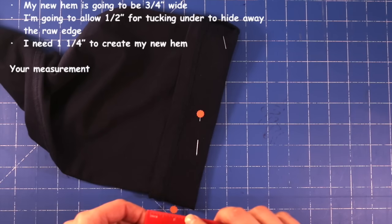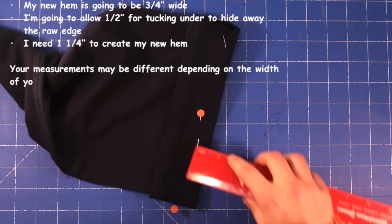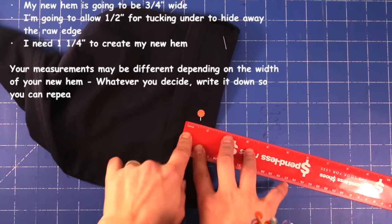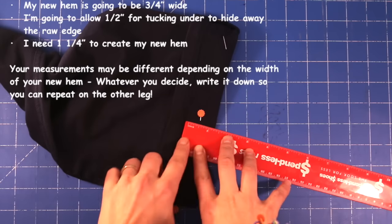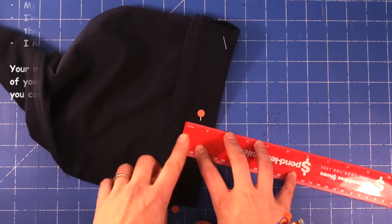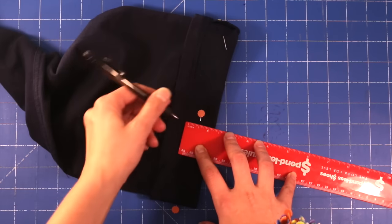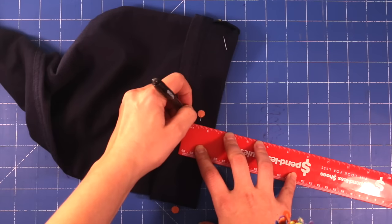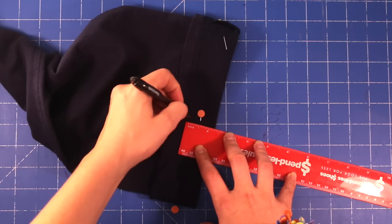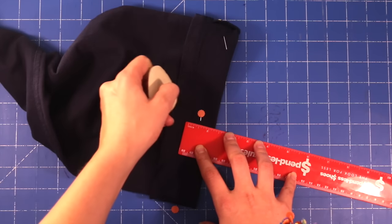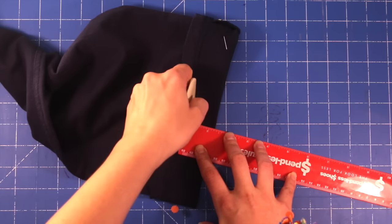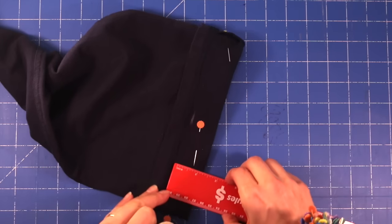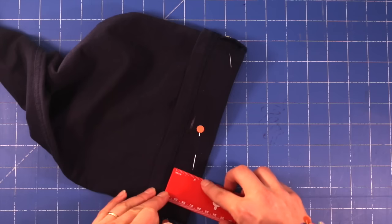So all together I need to allow one and a quarter inches to secure my new hem. So what I'm going to do is go around and mark all the way around. You might like to grab your pen. You should be able to see your pen lines. You'll probably find it hard to see mine. So, I'm just going to grab some chalk and mark my lines with chalk. So, we're going to do one and a quarter inches all the way around.